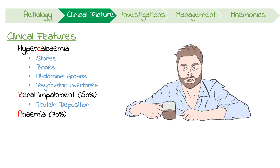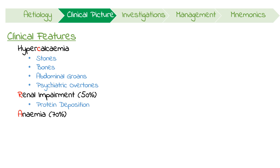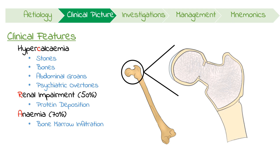Anemia is another major sequelae of myeloma, and occurs in 70% of patients. When plasma cells excessively proliferate, they infiltrate the overcrowded bone marrow, causing the other cell lines to deplete. This usually results in a normochromic, normocytic anemia.